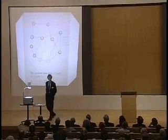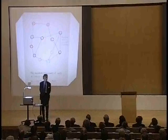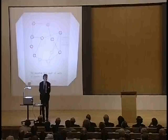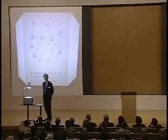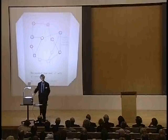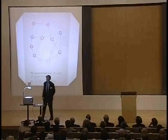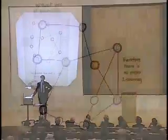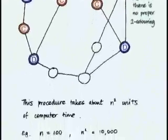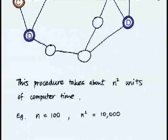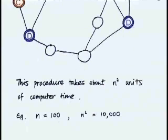What that translates into is that if you want to devise a computer program to solve this problem for you — when instead of having the 12 nodes that I've got here you had a thousand nodes — you can do it. If N stands for the number of nodes, then roughly N squared will be the number of steps that this procedure takes. I'm slightly taking into account that a computer can't just look and see that there's an edge in quite the way that we can, so that's why I put N squared there.